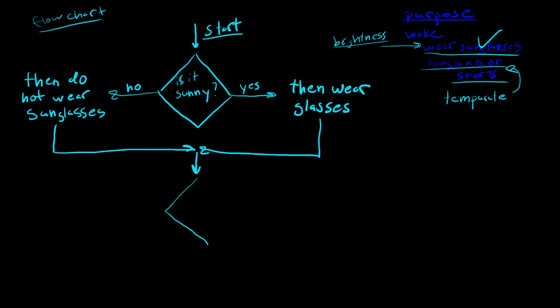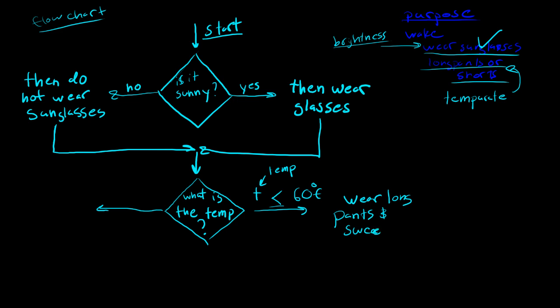So we'll use another little diamond. And we'll just ask, what is the temp? And we'll just have, we'll draw the line at two options. And we'll say T for temp. If it's less than or equal to 60 degrees Fahrenheit, then we will wear long pants and maybe a sweater. However you spell sweater. And preferably an ugly Christmas sweater.